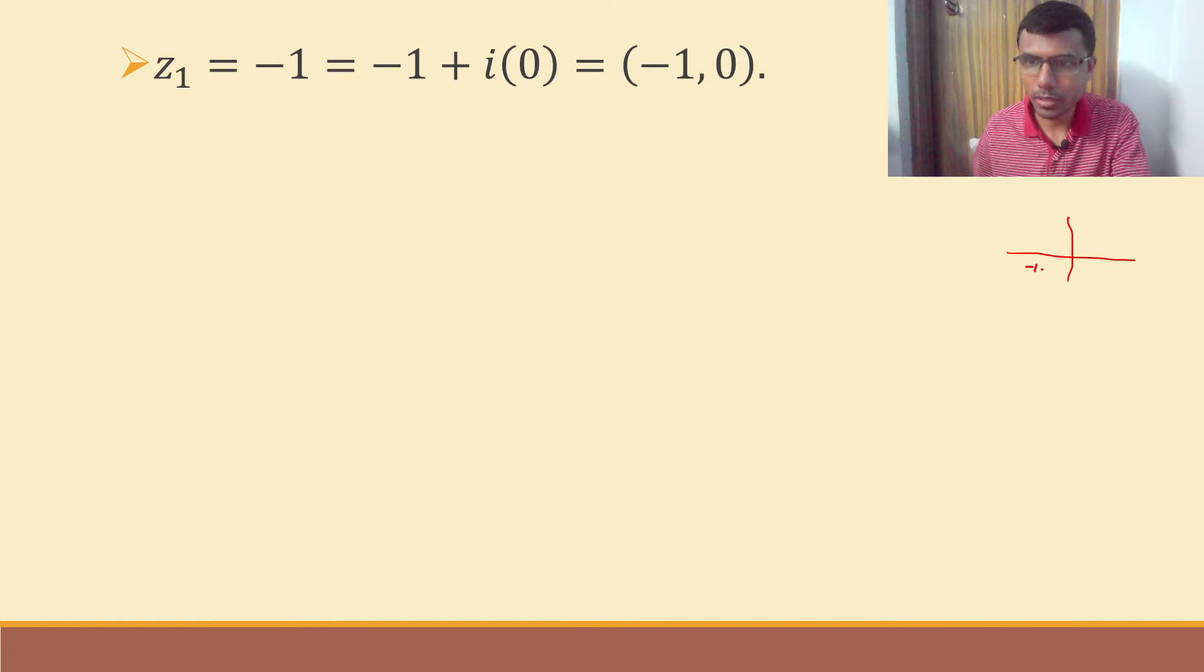It's going to be minus 1 comma 0, somewhere here. This is the point minus 1 comma 0. This is my origin 0 comma 0. Now just connect these two.